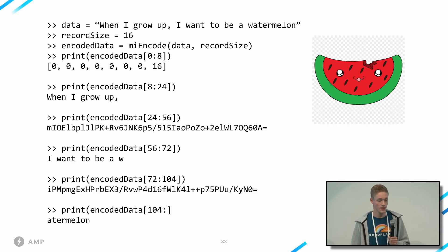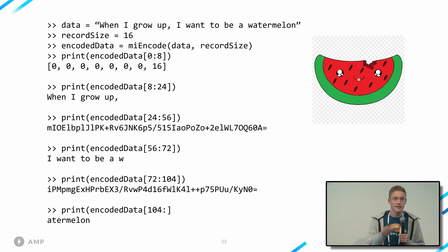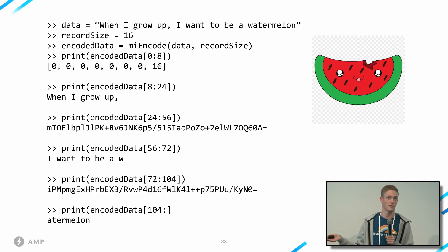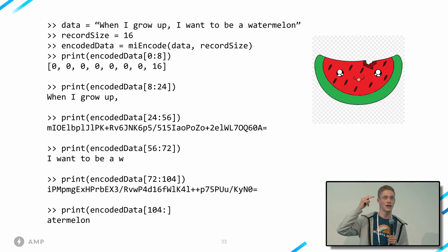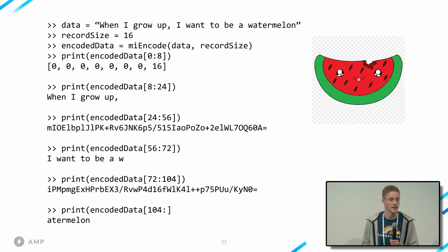Here's an example of what the encoding would look like. Typically a signed exchange would encode an HTML page, but for demonstration we'll use the string 'when I grow up, I want to be a watermelon.' The record size here is just 16 — it denotes where to insert hashes; typically this will be a larger number like 4096. The first eight bytes are encoded, padded with zeros, then it ends with the record size, and then interchanges between message, hash, message, hash, and so on. You can't change any of this without completely invalidating the encoding.